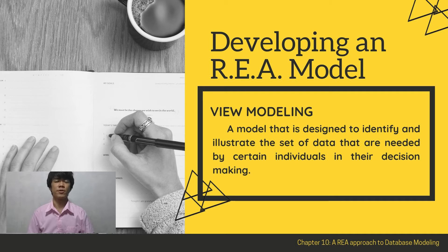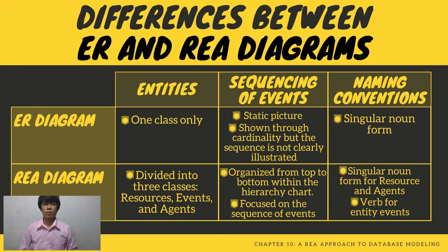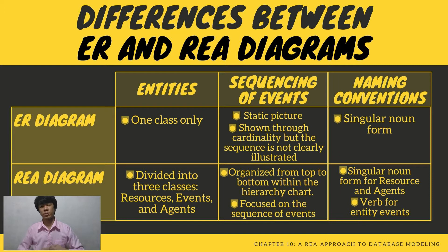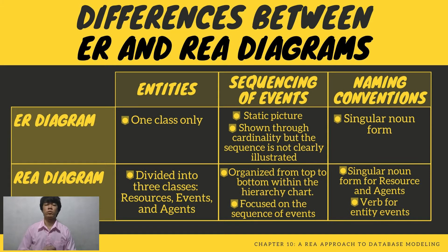Now that you have some knowledge about the REA model, let's discuss the differences between ER and REA models. There are three differences between ER and REA diagrams: Entities, Sequencing of Events, and Naming Conventions. In terms of entities, the ER Diagram deals with one class only, while the REA Diagram is divided into three classes: Resources, Events, and Agents.